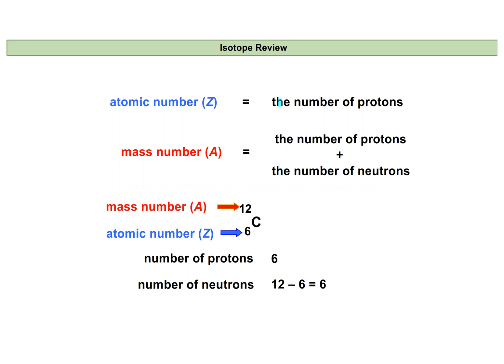One, that the number of protons is always going to be equal to the atomic number, and we can find this atomic number on our periodic table.